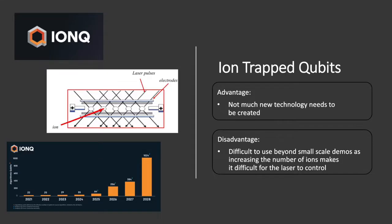To form the qubits, the ions are trapped in tiny wells with a pulse of light from a laser being used to nudge the ion between the different states. Trapped ion qubits are used by the company IonQ, and this works pretty well because the ions are electrically charged so they can be held relatively in place by the electromagnetic field.